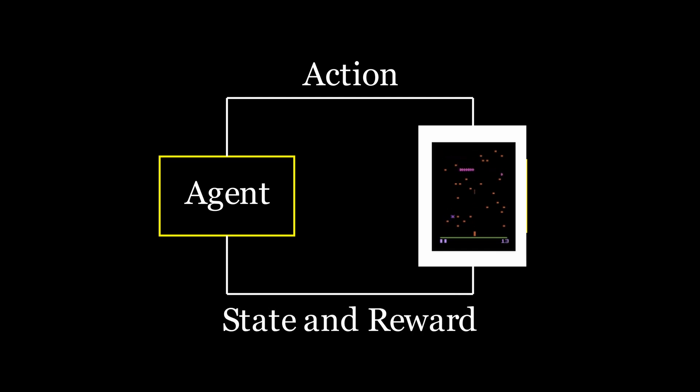You get this loop: agent takes action, environment gives state and reward back to agent, then agent gives action, so on and so forth. I think the best example to demonstrate how these two things look tied together is the cliff walking problem.